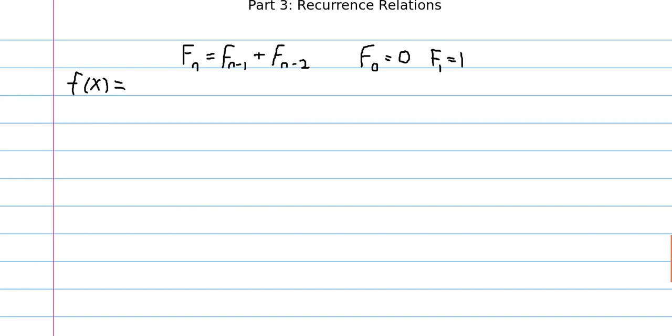So I'm going to write out the first few terms of the generating function for the Fibonacci numbers, and that is we get x plus x squared plus 2x cubed plus 3x fourth and so on. And this is not 1, 2, 3, 4, 5, 6, 7, it's the Fibonacci numbers.